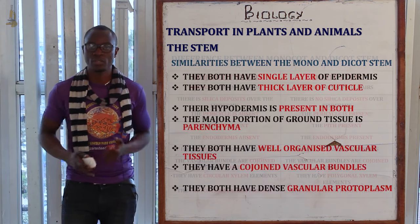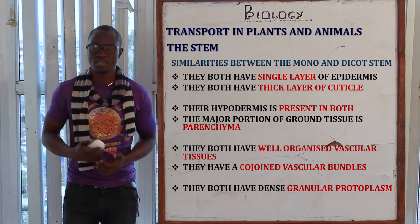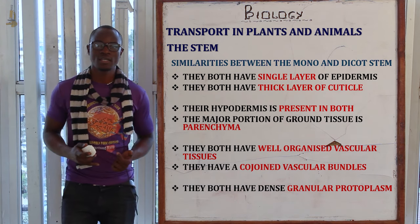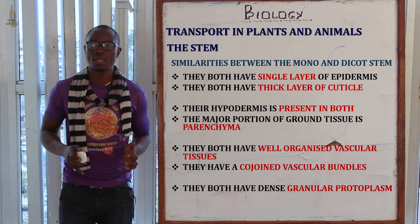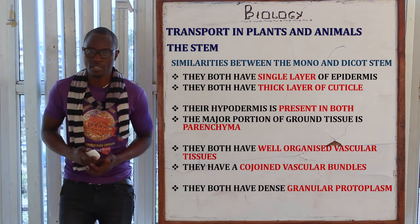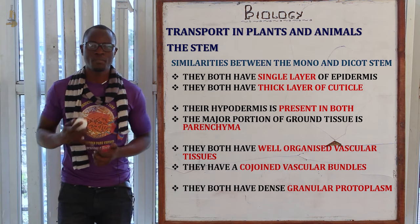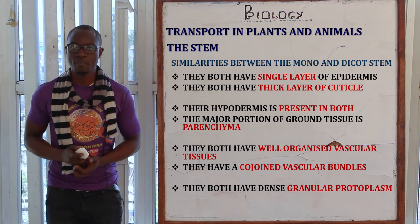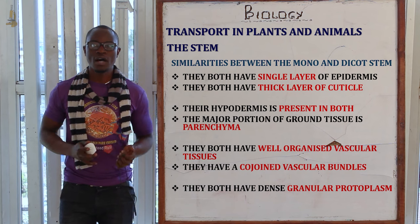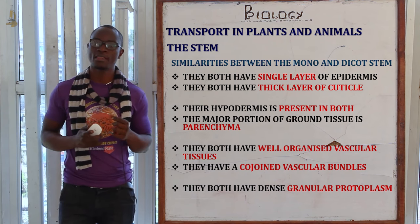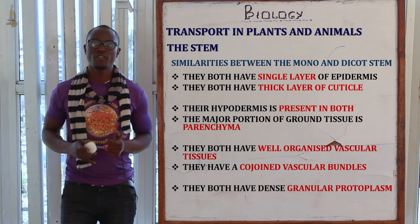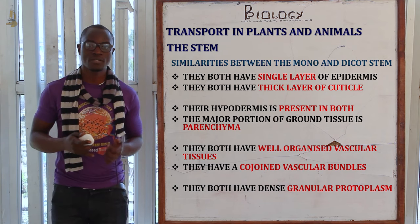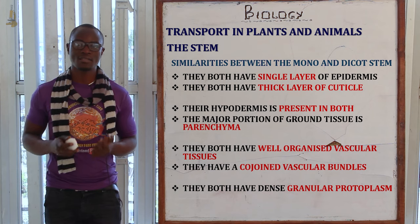Similarities between the monocot and dicot stem: both have a single layer of epidermis and both have a thick layer of cuticle. The hypodermis is present in both. The major portion of the ground tissue in the stem in both is parenchyma tissue. Both have a well-organized vascular bundle — wherever there is xylem, there is phloem. Both have conjoined vascular bundles, even though one is closed and the other is open. Both have a dense granular protoplasm.